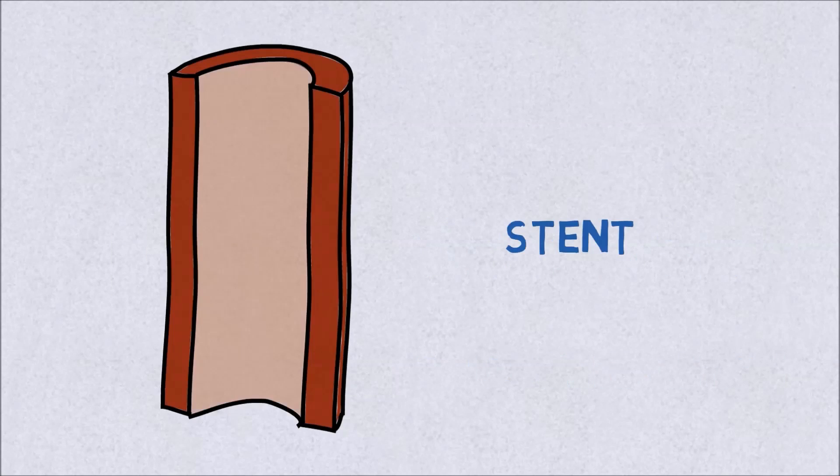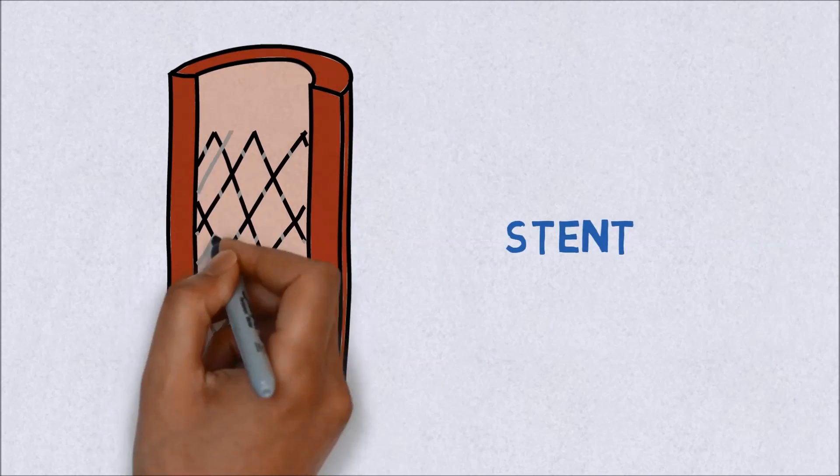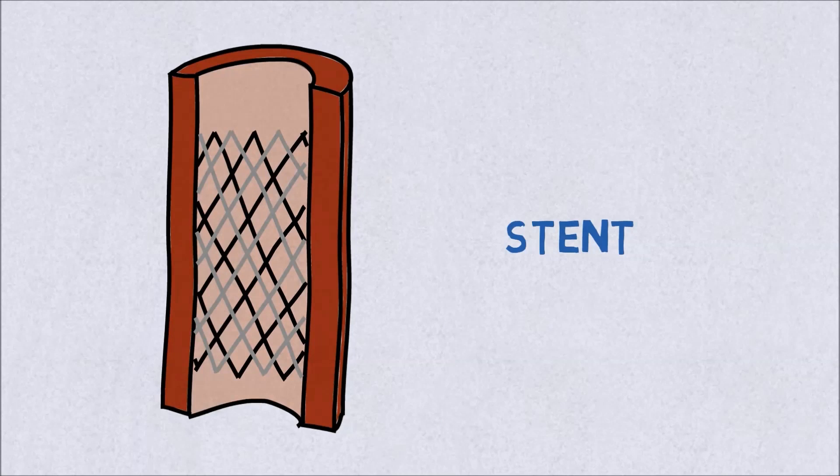In many cases, a metal mesh tube or scaffold called a stent is then placed at the site of the narrowing to keep the blood vessel open.